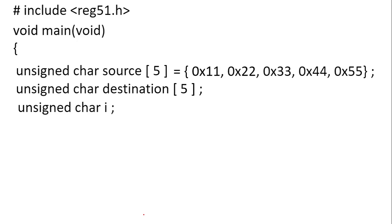To store the index, one more variable is required. That variable is declared as unsigned character i. The variable i will point to the index of the array and will step from 0 to 4 one by one.